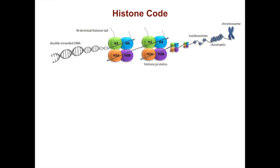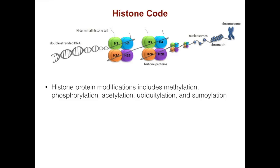Histones can be modified in a number of ways. Histone protein modifications include methylation, phosphorylation, acetylation, ubiquitylation, and sumoylation. These modifications act in diverse biological processes such as transcriptional activation or inactivation, such as in the case of acetylation, chromosome packaging, and DNA damage and repair.